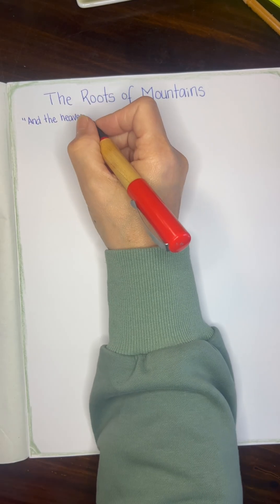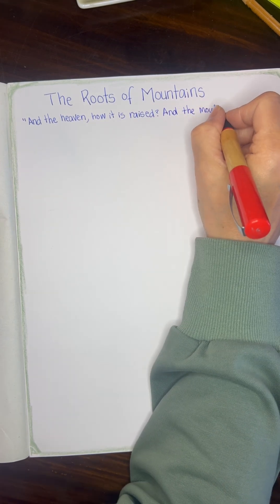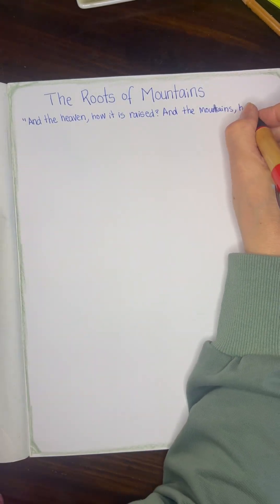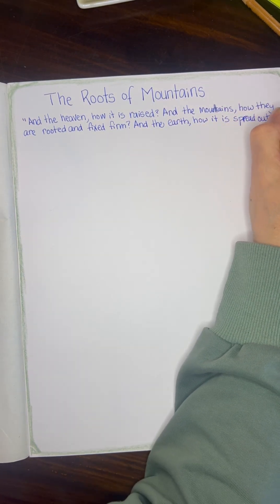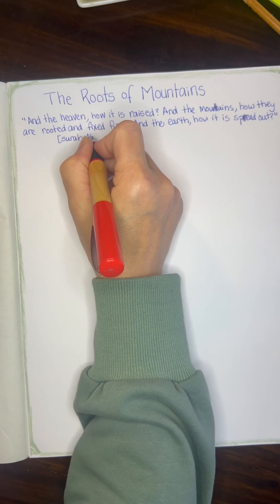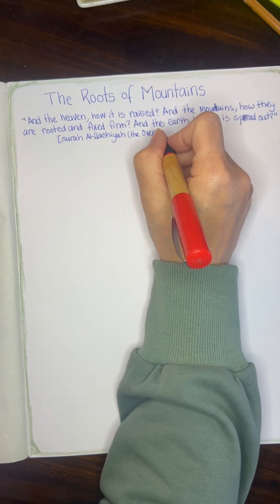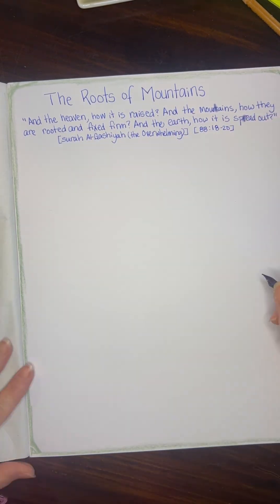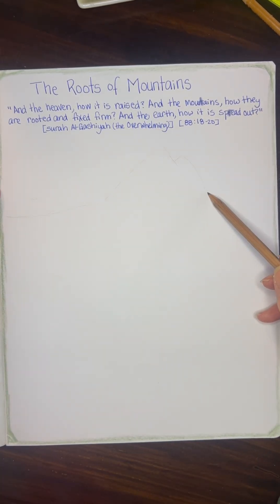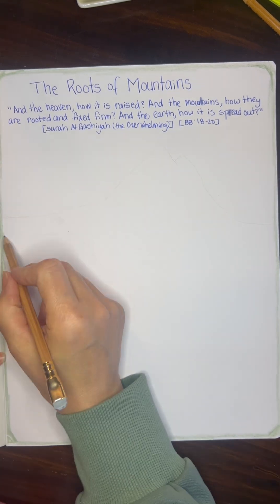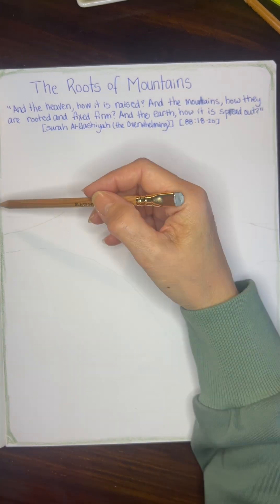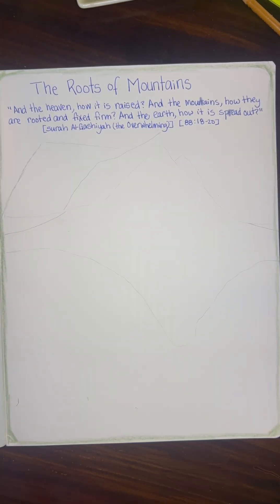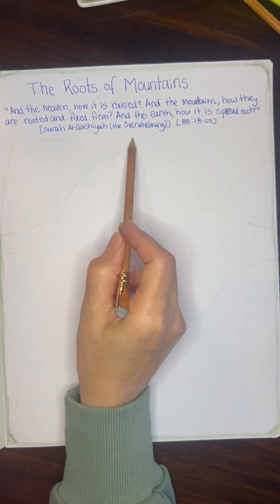Mountains are mentioned over 30 times in the Quran. Often they are mentioned in regards to the way that they are laid and fixed firmly. Other times the Quran mentions that mountains will be turned to dust on the day of judgment, and then mountains are also mentioned as dwellings or in regards to other stories. There is another ayah that mentions the colors of mountains — black or red — and we plan to use that as an opportunity to talk about igneous mountains versus sedimentary mountains.